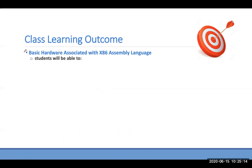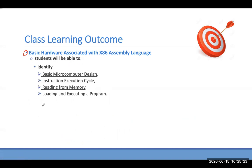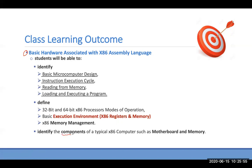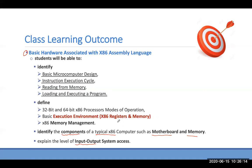We're going to look at the basic hardware associated with x86 assembly language. You'll learn about basic microcomputer design, the construction execution cycle, reading from memory, and loading and executing programs. We'll identify 32-bit and 64-bit microprocessor modes, look at basic executions for x86, and then cover memory management. Next class we'll focus on the motherboard, memory, microprocessor registers, and IO.